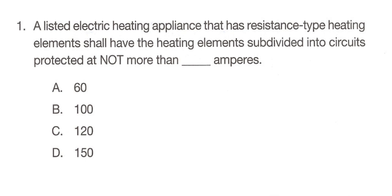A listed electric heating appliance that has resistance type heating elements shall have the heating elements subdivided into circuits protected at not more than blank amperes. A: 60, B: 100, C: 120, D: 150.